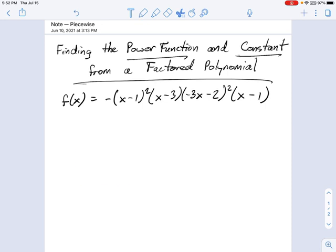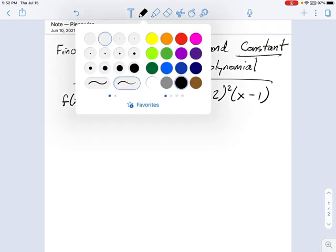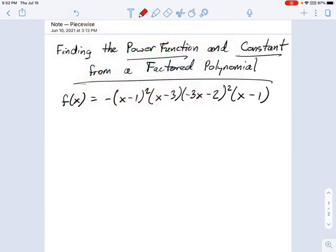Let's do an example with this one. If I want to know what the constant term is, here's how I go about it. I say negative, because the negative is still up front, we have to deal with that. Negative (-1)² × (-3) × (-2)² × (-1).